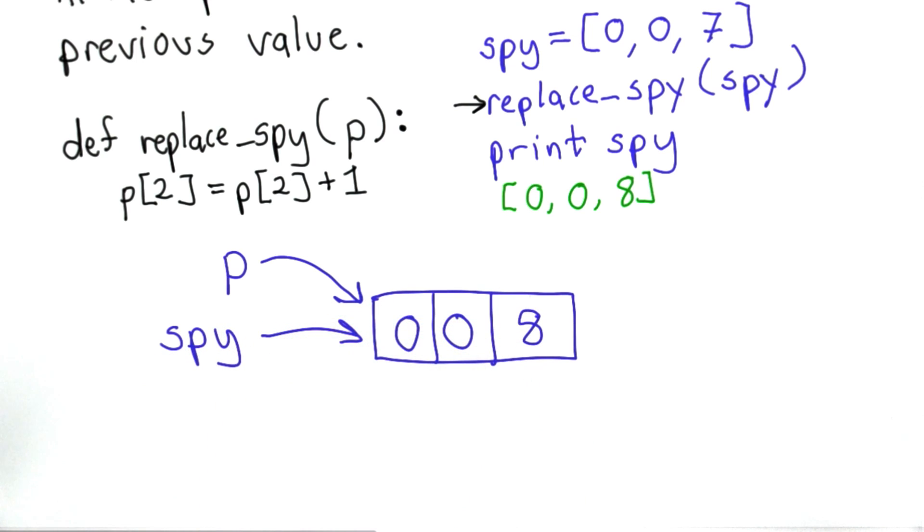The parameter p and the variable spy both refer to the same object. So that also changes the value of spy. Note that there's no return statement here. We don't need to return a new value. We've modified the value of the list that was passed in.